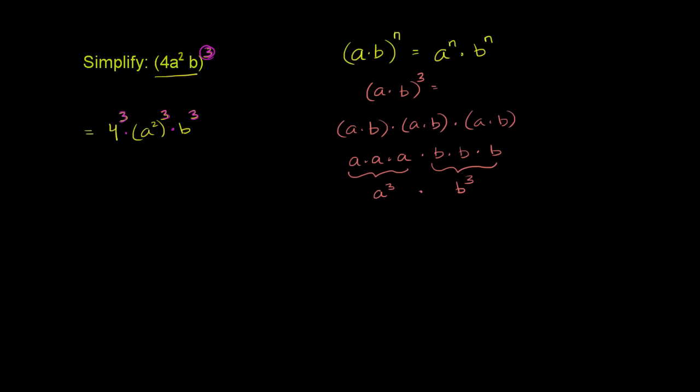And let's try to simplify this. So what is 4 to the third power? 4 to the first is 4. 4 to the second is 16. And then we want to multiply 16 times 4. So 4 to the third power, which is 4 times 4 times 4, is 64.